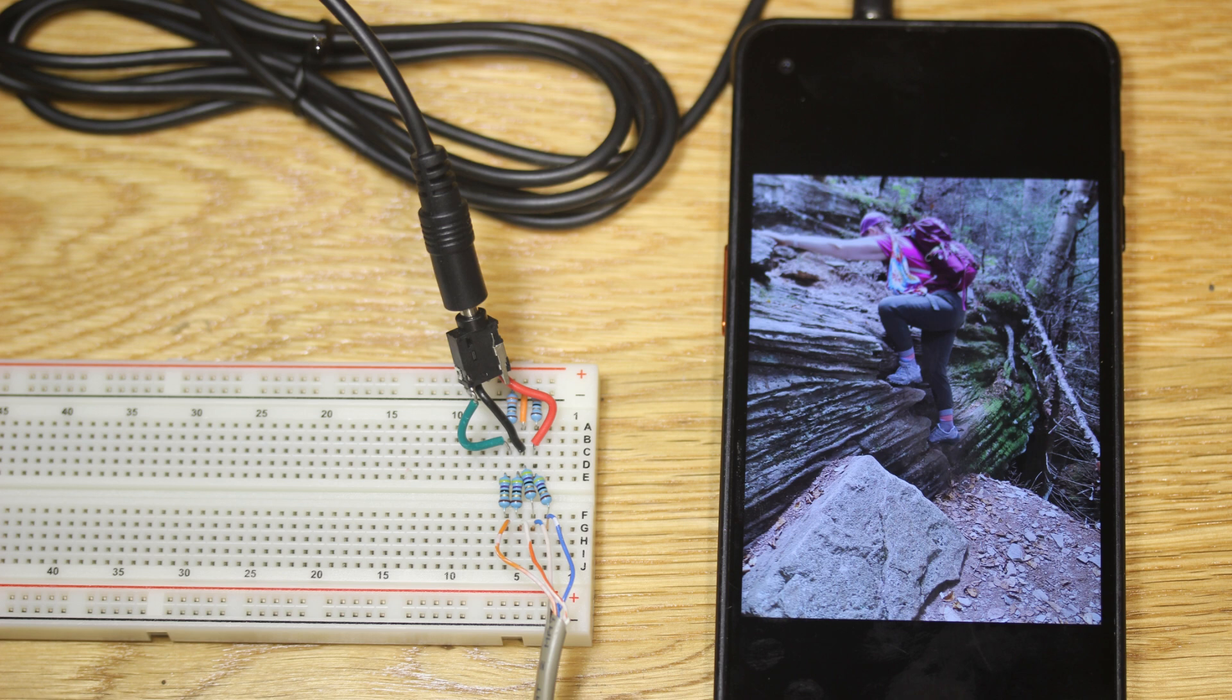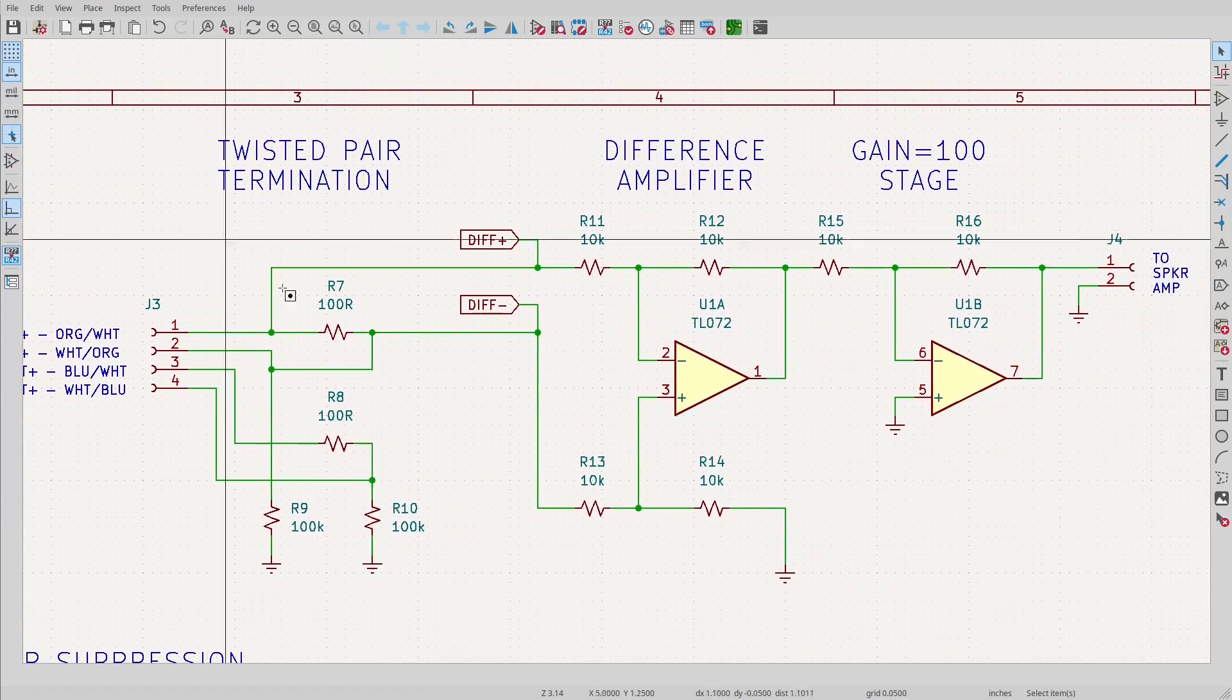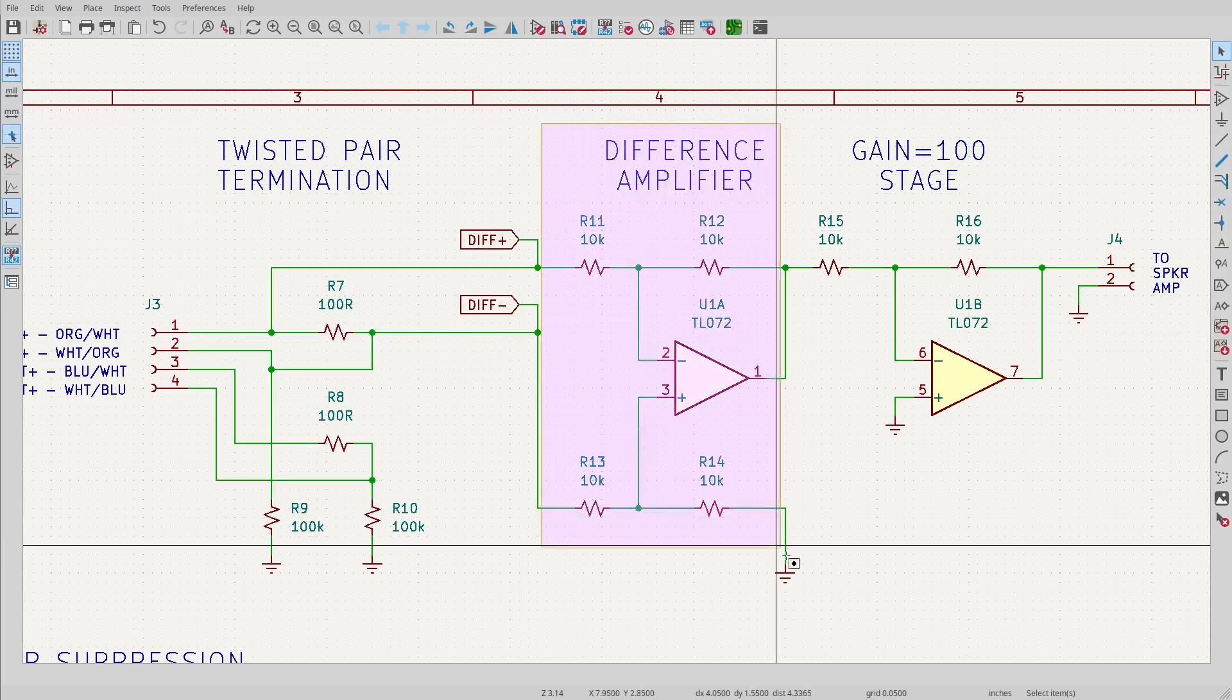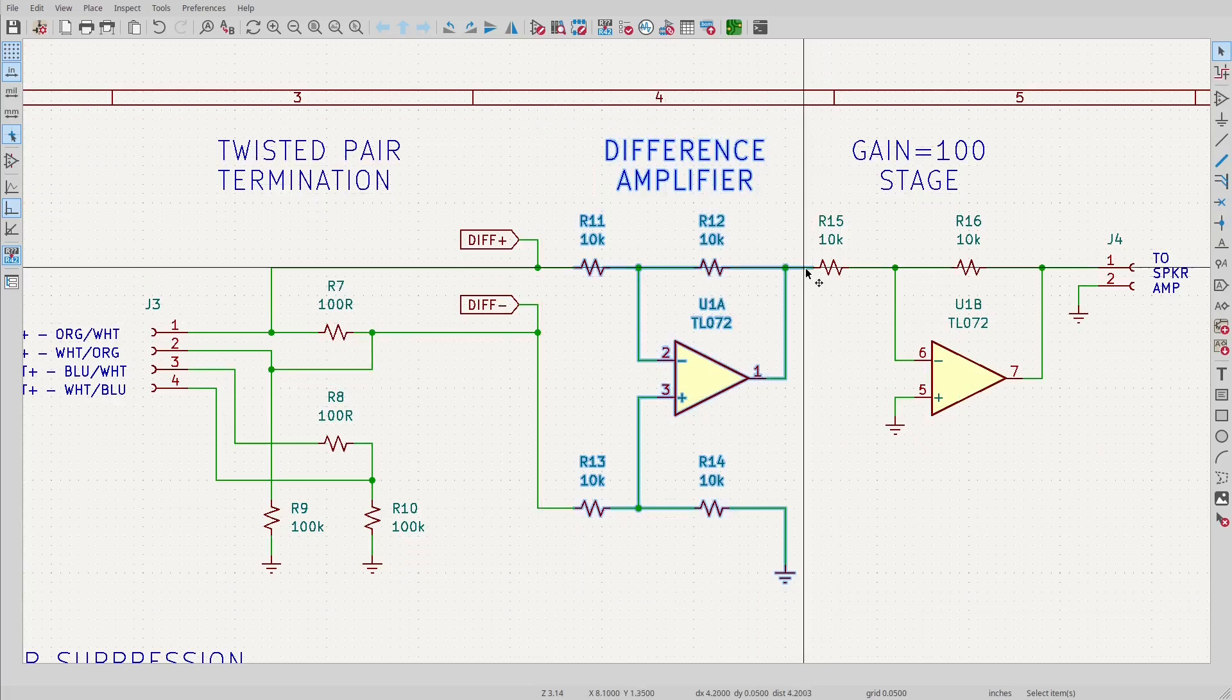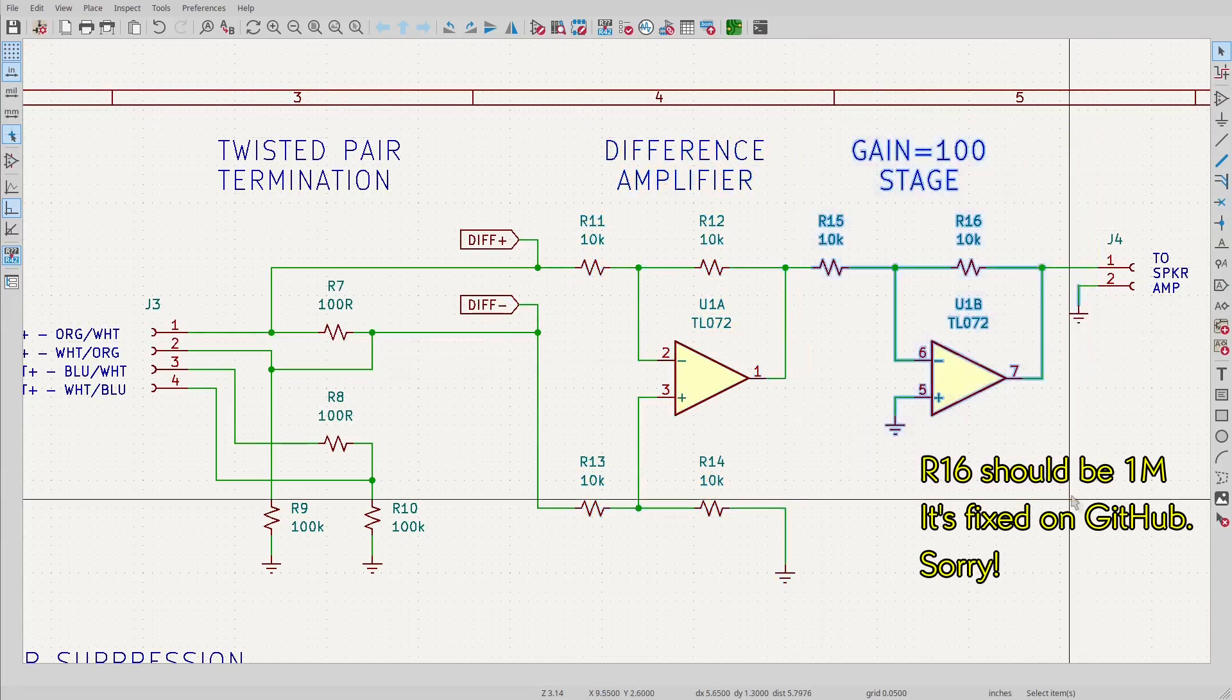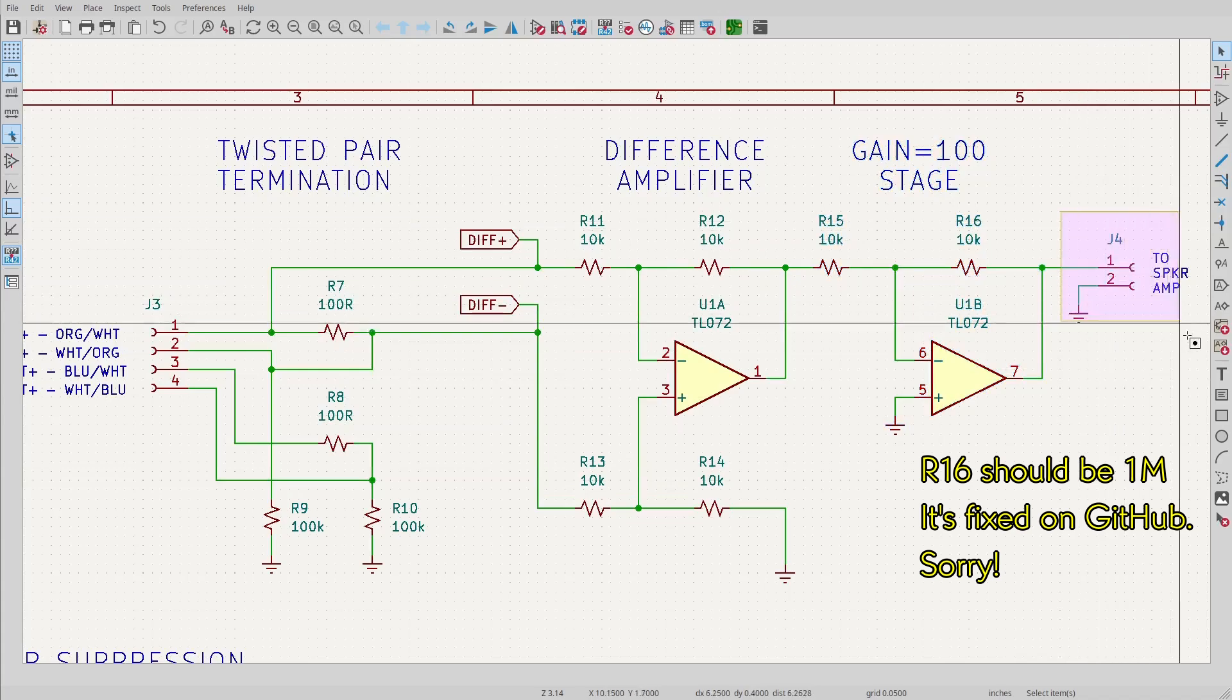This little breadboard has that part, with the headphone jack and the telephone cable. Then I've built a circuit with termination resistors for the twisted pairs, and diff amp built with 10k resistors. The signal arrives here at a relatively low voltage, so I'm boosting it with a gain of 100, before sending it off to the speaker amplifier that we built in the last episode.